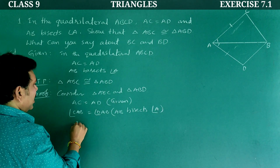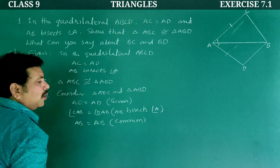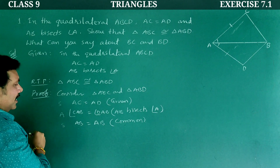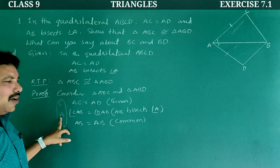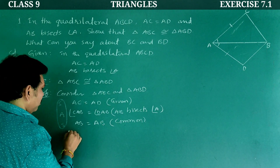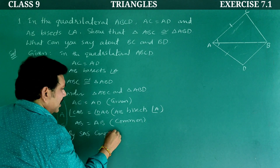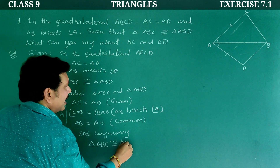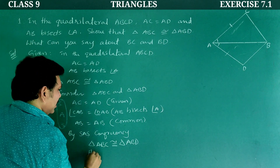This is one side, this is the angle, and this is the side. So according to SAS congruency, triangle ABC is congruent to triangle ABD. By SAS congruency, triangle ABC is congruent to triangle ABD. Hence proved.